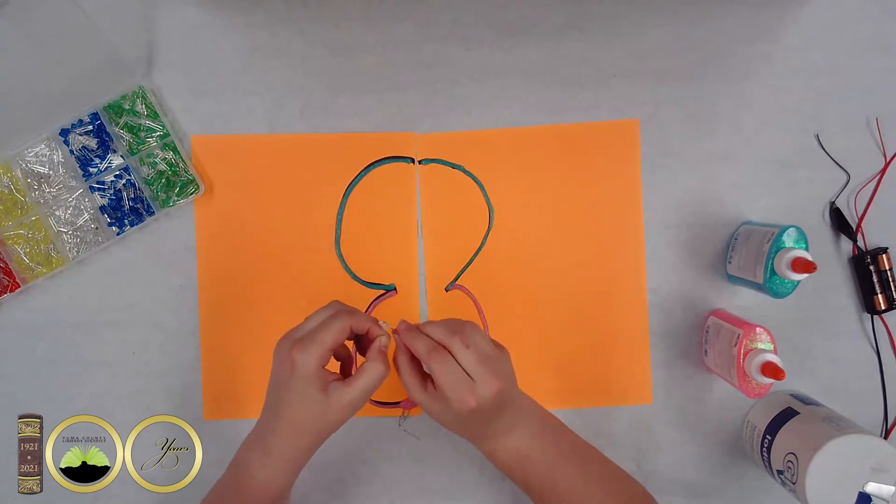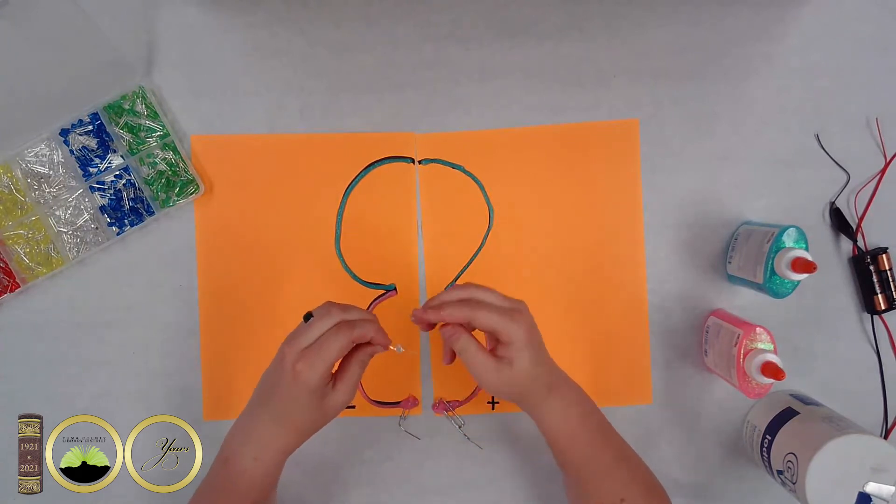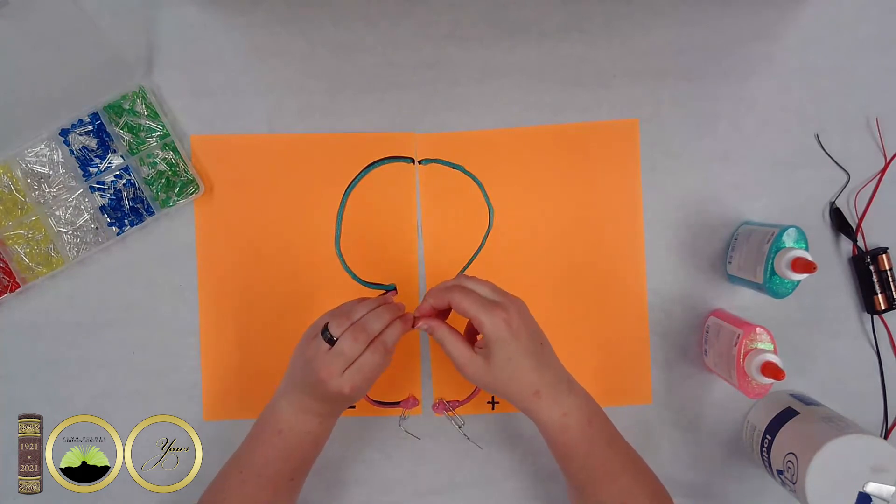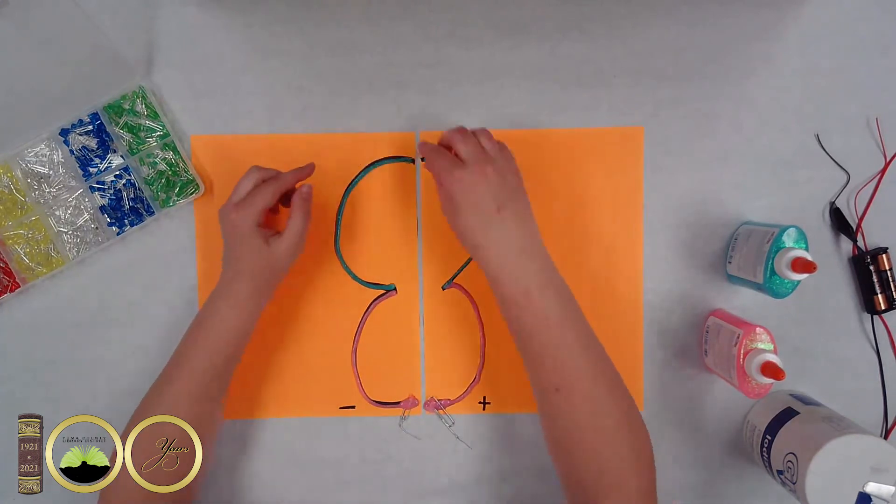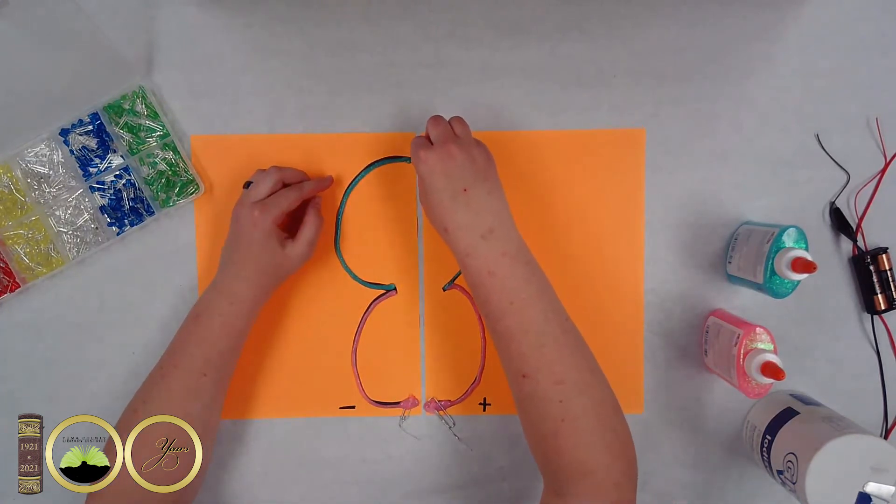So you need to kind of make them do the splits and you're going to line the positive side. You see I rotated it so the positive side is on the right lining up with the right side and the negative is lining up with the negative side. Go ahead and push down and insert it in the glue. Make sure it's in there pretty good.